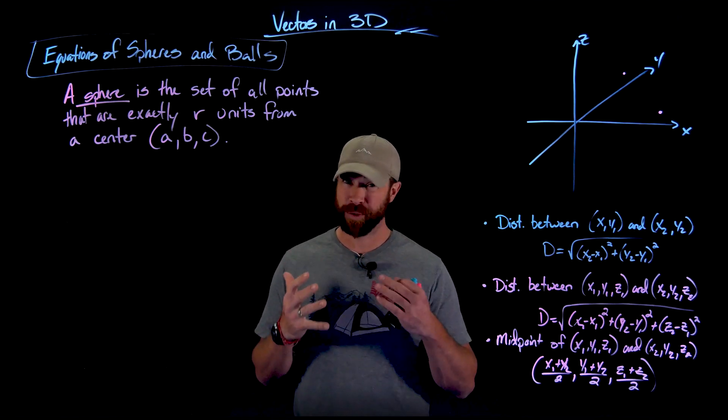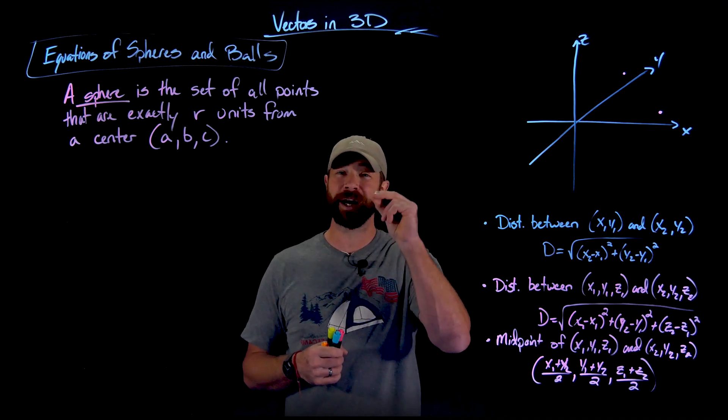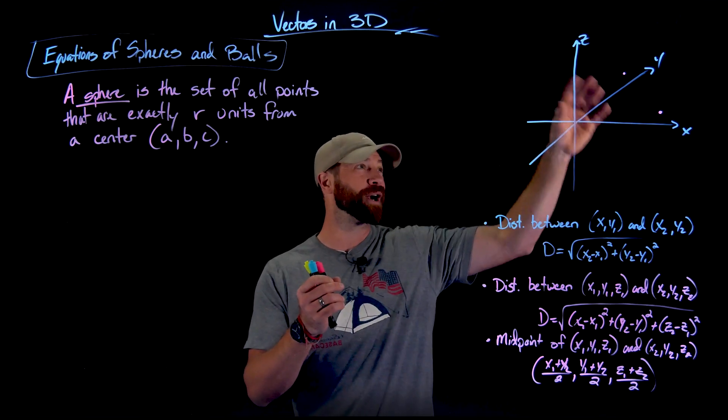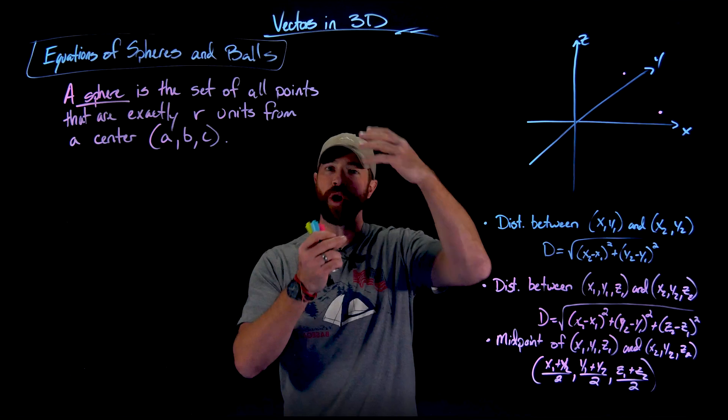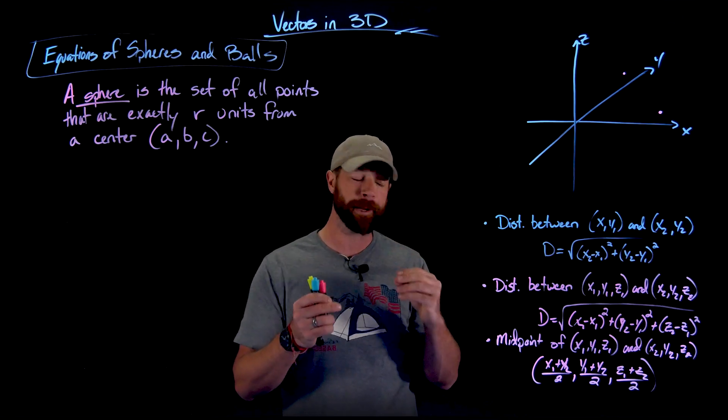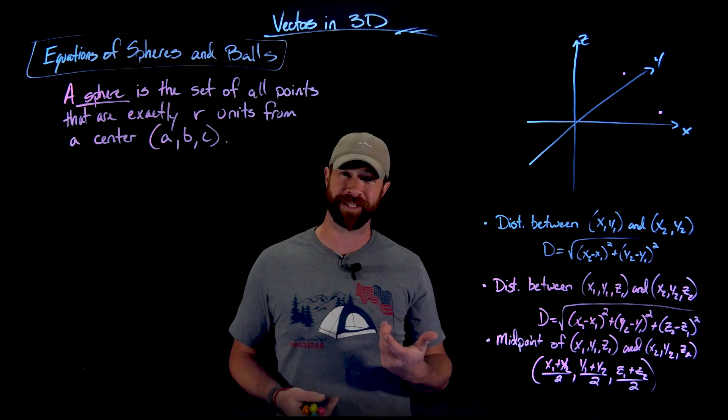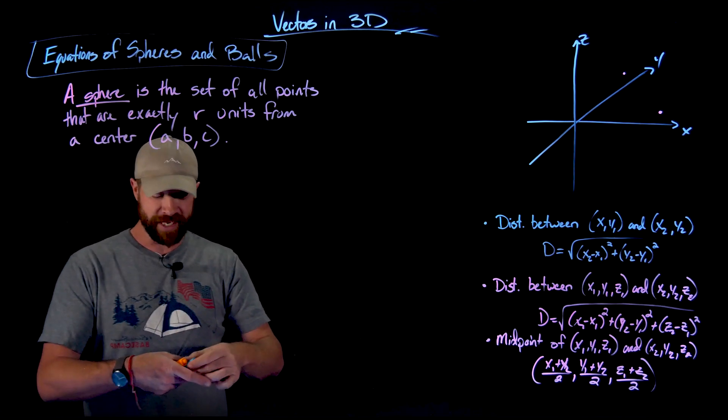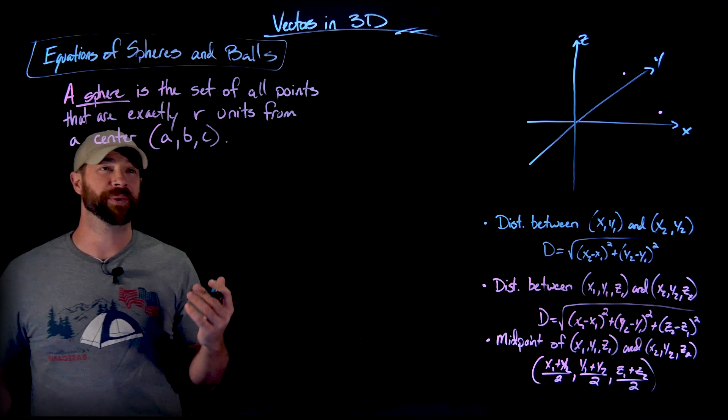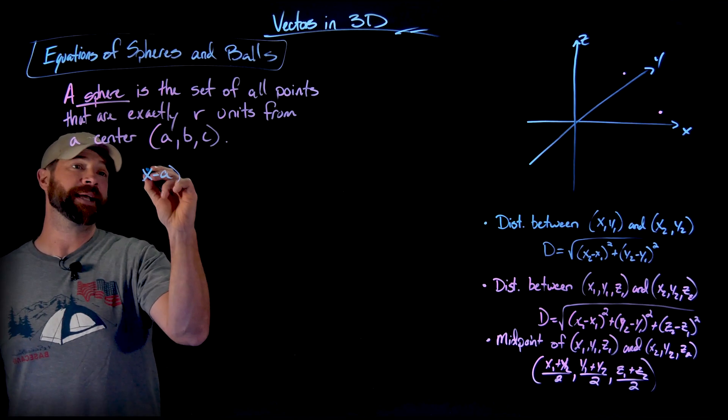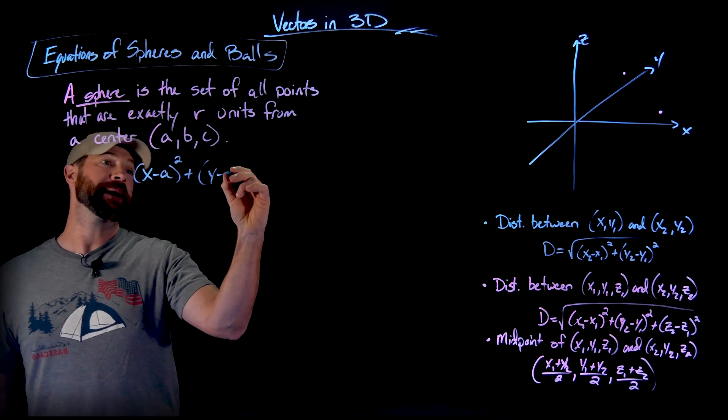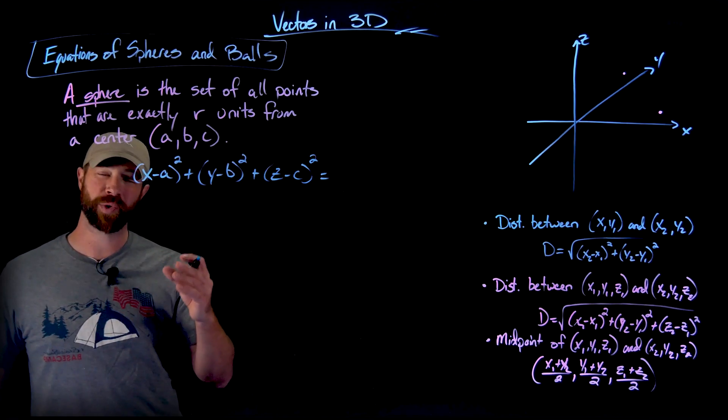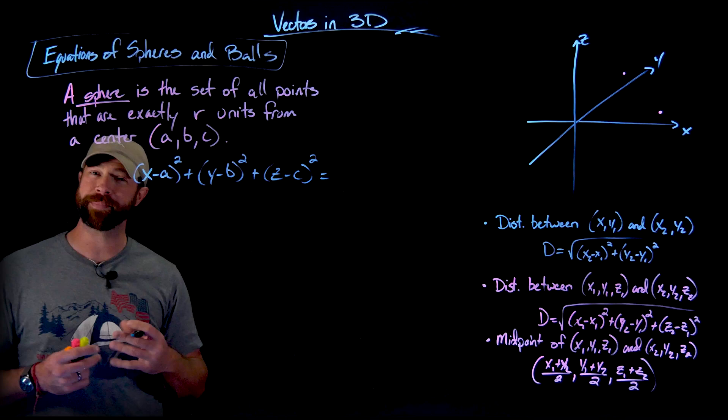A sphere, as described, is a set of points that are exactly a certain R units, R, which we call our radius, from a certain center. So we have a center point anywhere on our plane, our three-dimensional plane. And we want all of the points that are exactly R units away. Well, simply, we can use this distance formula to create that. But if we define this as a center as A, B, C, the equation, and again, it shouldn't be surprising to us, is X minus A squared plus Y minus B squared plus Z minus C squared.